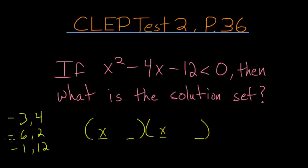If we had a minus 6 and a plus 2, those would multiply to give negative 12 and add to give minus 4. So our numbers are minus 6 and plus 2. This is less than 0.